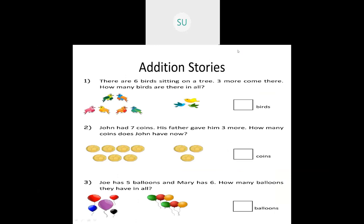Then we saw addition stories. They give you a story on numbers and you have to add to find the sum. For example: there are six birds sitting on a tree and three more come and join — six plus three is nine, so there are nine birds in all. John had seven coins and his father gave him three more — seven plus three is ten coins. Joe has five balloons and Mary has six — five plus six is eleven balloons in all. Now we'll see a few more questions on addition.